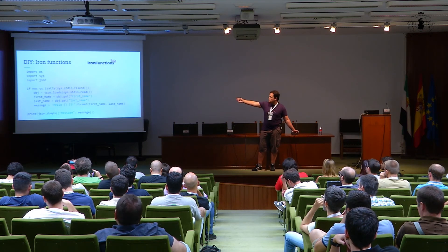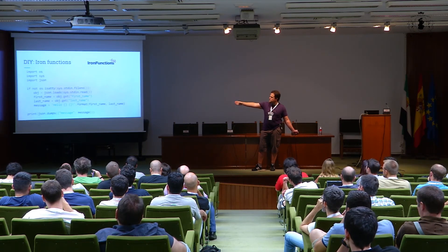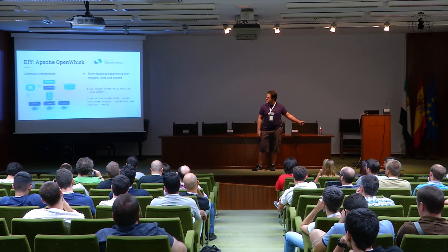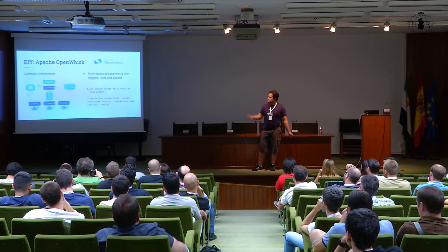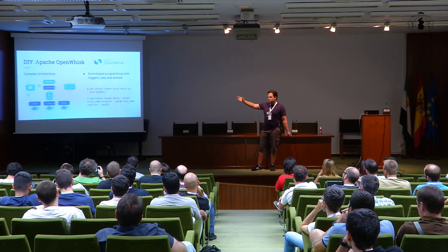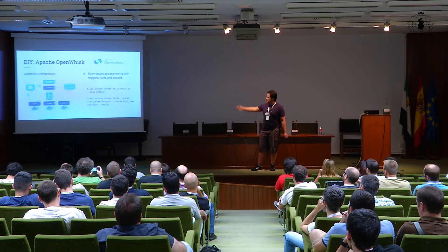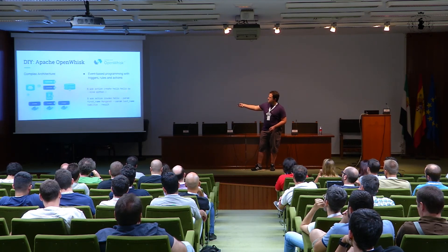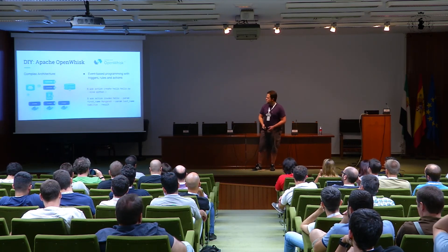This could be the code — we are just reading from standard input and printing to standard output. Apache OpenWhisk is another alternative, much more complex: it uses CouchDB, Nginx, and Kafka, and it really embraces a programming philosophy using triggers, rules, and actions. It has support directly out of the box for Python 3, so you just create your function with your .py file.